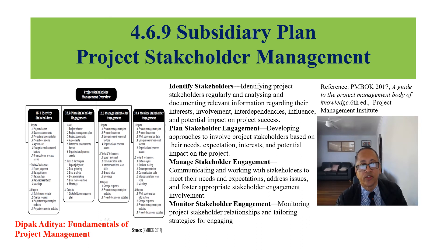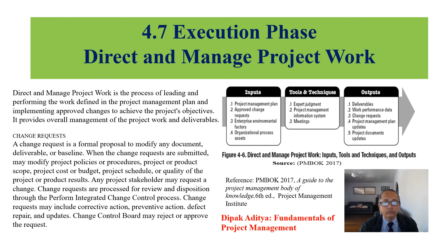Project stakeholder management processes are: identify stakeholder, plan stakeholder engagement, manage stakeholder engagement, and monitor engagement. Managing stakeholder engagement is the process of communicating and working with stakeholders to meet their needs and expectations. Stakeholders can be monitored by salience or by grid of high and low power and interest. The execution phase is about directing and managing project work — any change will require a formal change request.